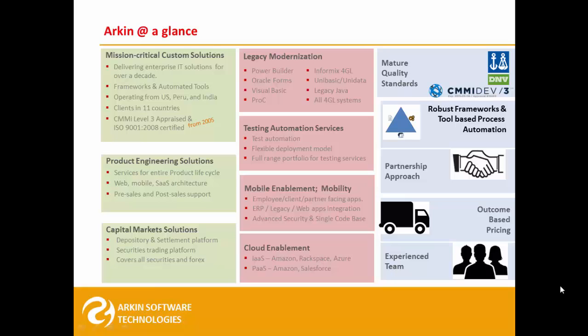Our approach to modernization evolved from two key aspects. One, applications must live in production for 15, 20, or even 25 years. To accomplish that, we apply enterprise Java JEE architecture standards, software engineering, and coding standards. The second aspect is to align business processes more closely with new IT capabilities.